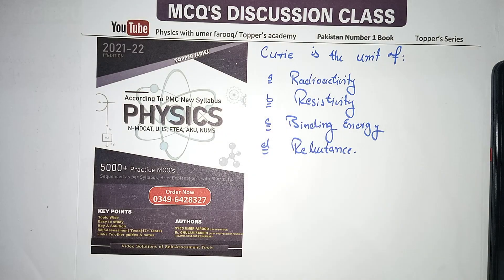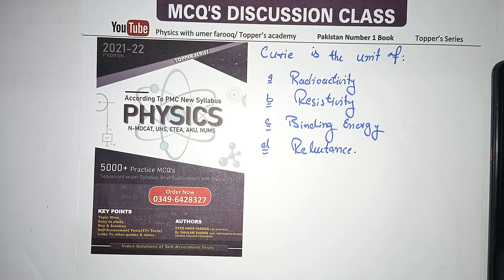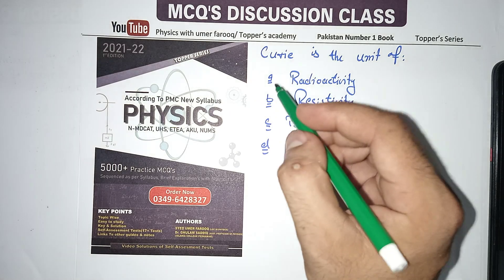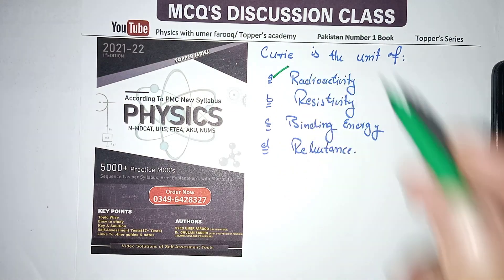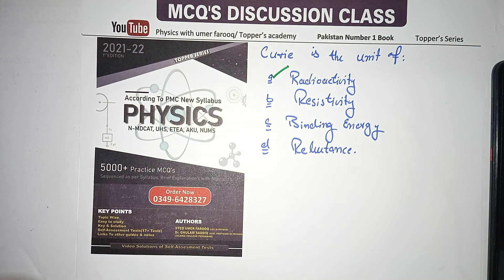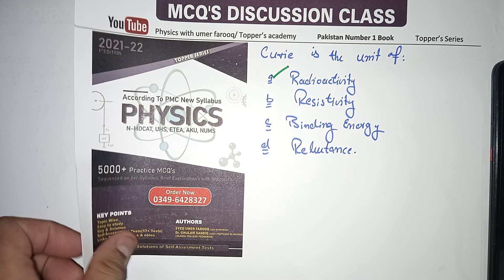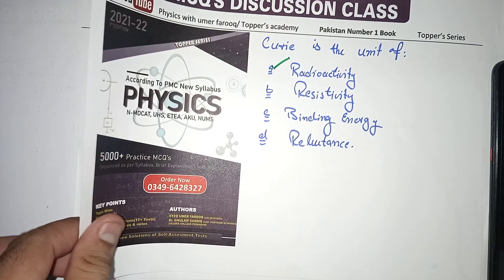Next MCQ: What is the unit of radioactivity? The unit of radioactivity is the becquerel.